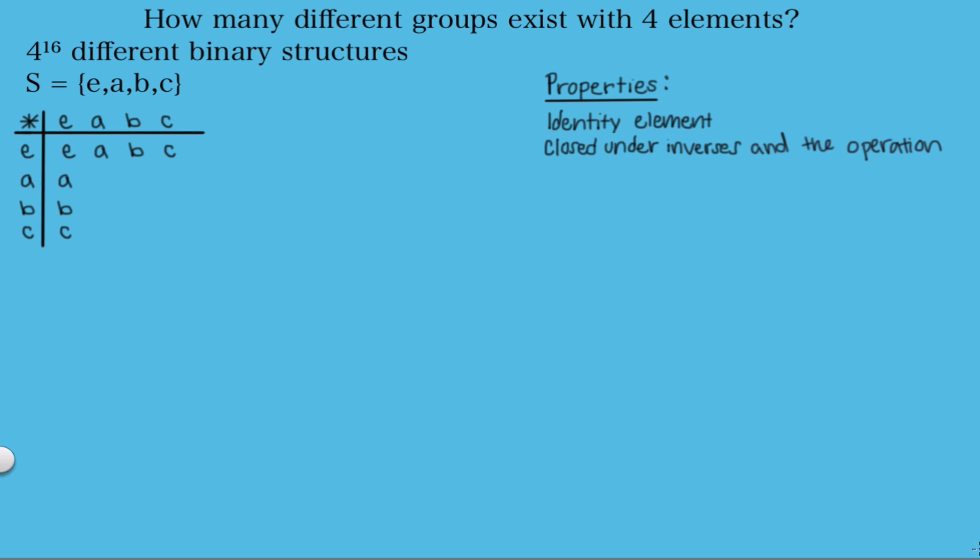Another property we know is that it must be closed under inverses. So every element of the set must have an inverse in the set. And it also must be closed under the binary operation. So every combination of elements must return an element in the set. So the only elements that can show up in this table are the elements in the set.